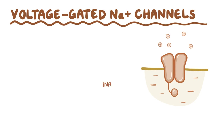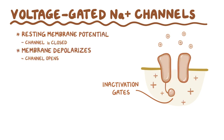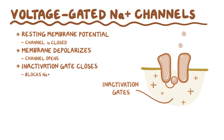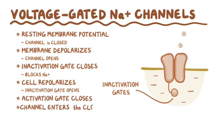Voltage-gated sodium channels are unique because they have inactivation gates on the intracellular side. At resting membrane potential, the channel is closed. When the membrane depolarizes, the channel opens and sodium ions rush into the cell. A few milliseconds later, the inactivation gate closes and blocks sodium from entering the cell even though the channel is still open — this ends the depolarization process. Finally, when the cell repolarizes, the inactivation gate opens, the activation gate closes, and the channel enters the closed state again, ready to start another action potential.